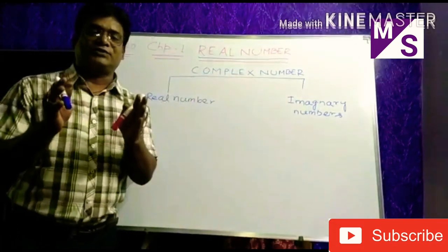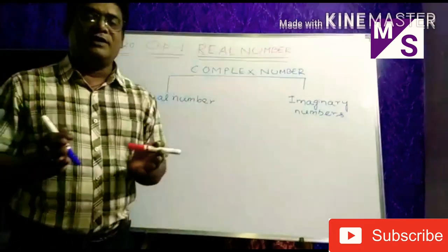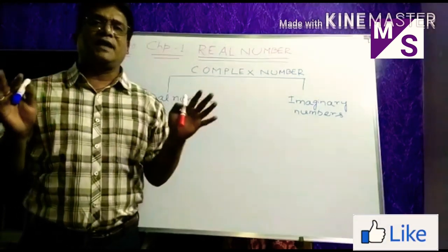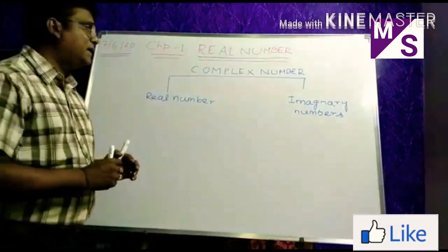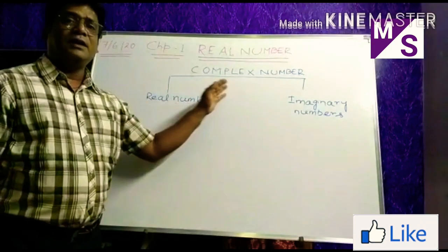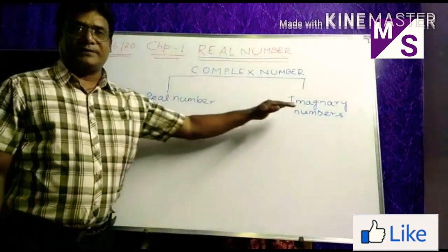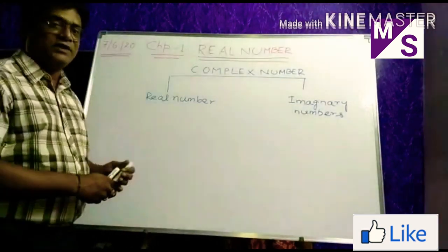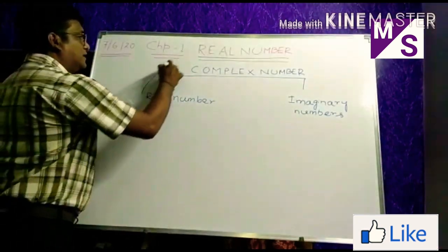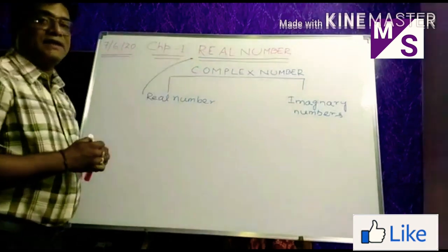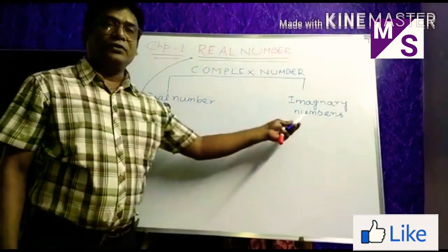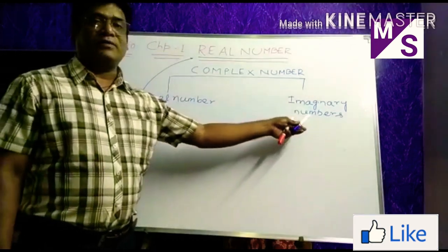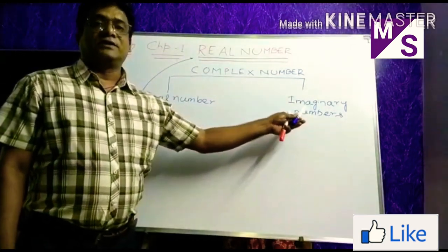Our mathematics deals with the biggest number system, called complex number, in which all the numbers are available. This complex number is divided into two types: one is called real number — which we are going to discuss today — and imaginary numbers, which you are going to study in higher studies.